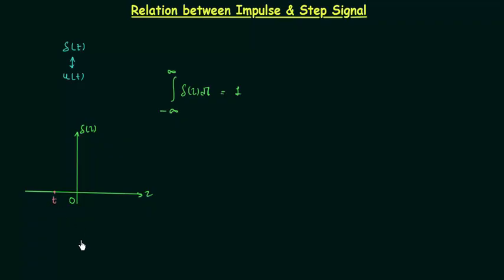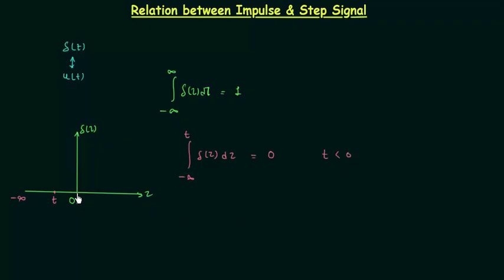Let's say this time here is equal to t, and you want to integrate δ(τ) from minus infinity to t. As you can see, when t is less than 0, we have area equal to 0, because δ(τ) from minus infinity to t is equal to 0, and the integration of 0 is equal to 0. So we have area equal to 0 when t is less than 0. If t is greater than or equal to 0, then the area will be 1, because from minus infinity to t, δ(τ) is not equal to 0.